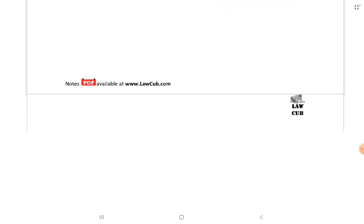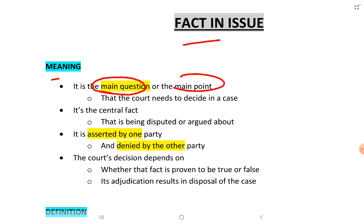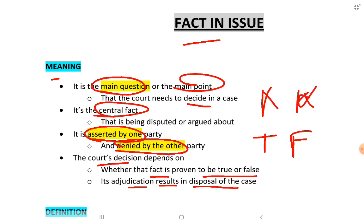Now the detailed meaning of fact in issue: It is the main question or main point that the court needs to decide in a case. It is the central fact being disputed — asserted by one party and denied by the other. The court's decision depends on whether the fact is proven to be true or false, and its adjudication results in the disposal of the case. If the fact in issue is decided, the case is complete.